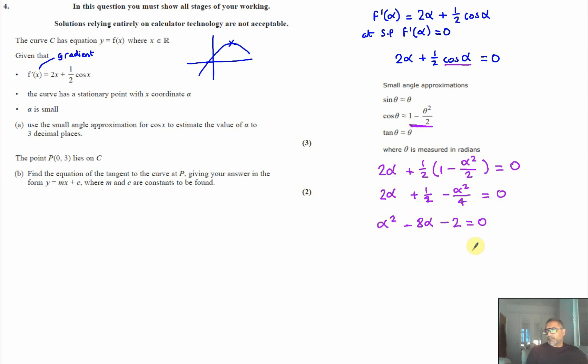Using our calculators, we solve that and get either alpha equals 8.2426 or alpha equals minus 0.2426. In this case, because we're using small angles, this value would be too large, so this would be an invalid answer. The correct answer is alpha equals minus 0.243 to 3 decimal places.